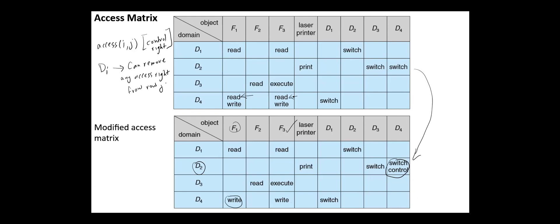The access matrix model allows us to implement and control dynamic protection requirements. New objects and new domains can be created dynamically and included in the access matrix model.